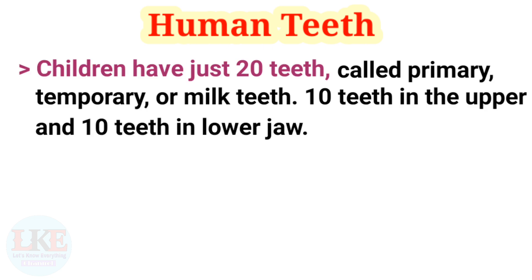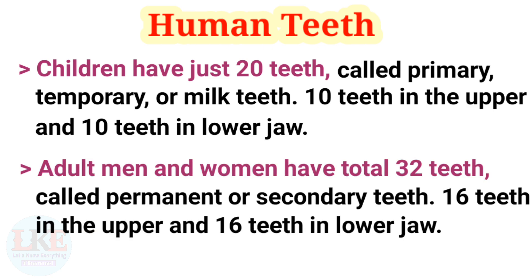Children have just 20 teeth, called primary, temporary, or milk teeth — 10 teeth in the upper and 10 in the lower jaw. Adult men and women have a total of 32 teeth, called permanent or secondary teeth — 16 teeth in the upper and 16 in the lower jaw.